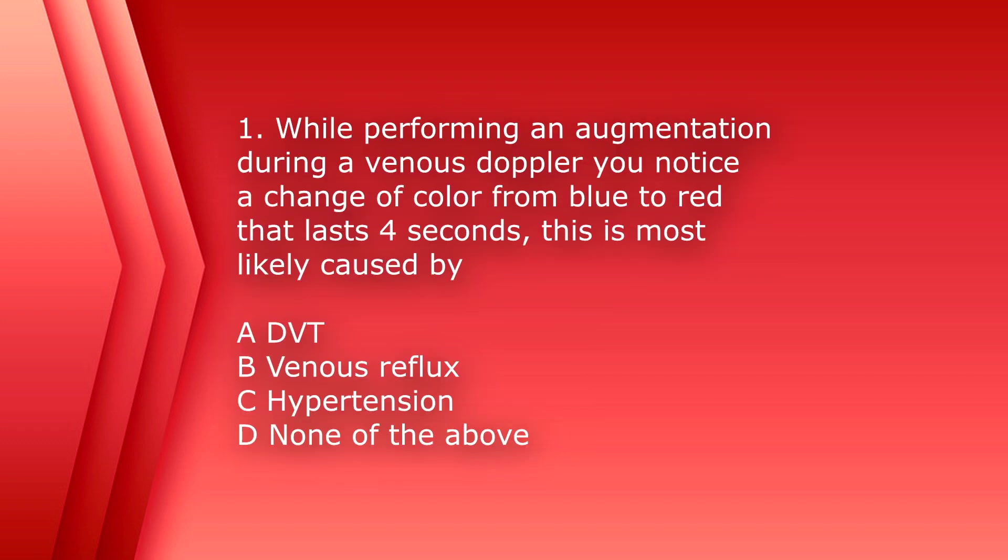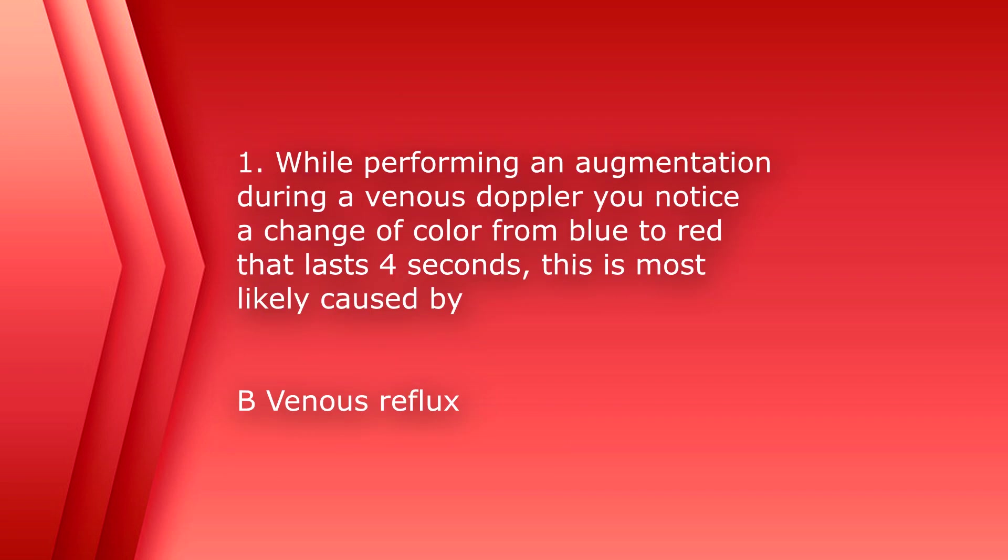Question number one. While performing an augmentation during a venous doppler, you notice a change of color from blue to red that lasts four seconds. This is most likely caused by A, deep vein thrombosis, B, venous reflux, C, hypertension, or D, none of the above. So making sure your scale is not inverted, the blue should be going away from the transducer and that's normal venous flow. If you have a signal of red, that means it's going towards the transducer. For a time period of four seconds, that would be B, reflux.